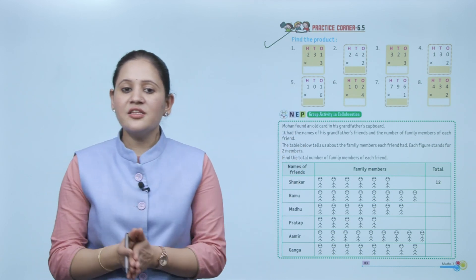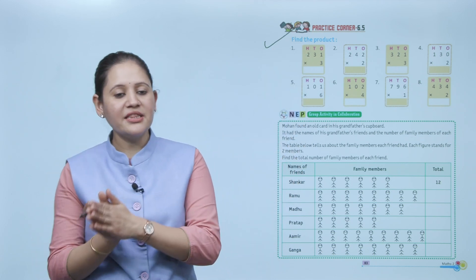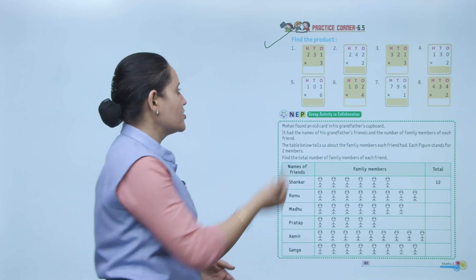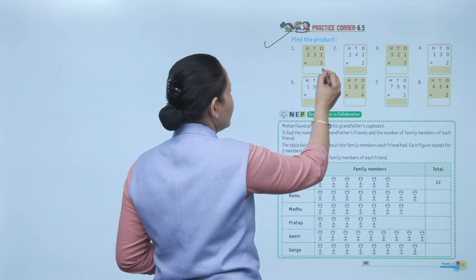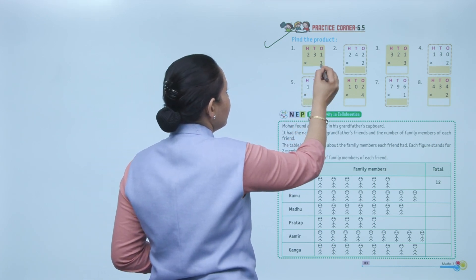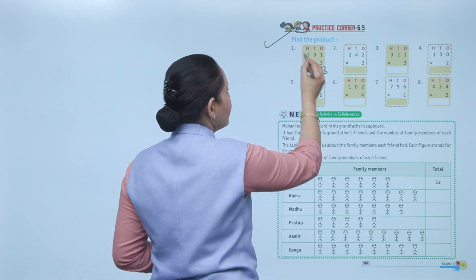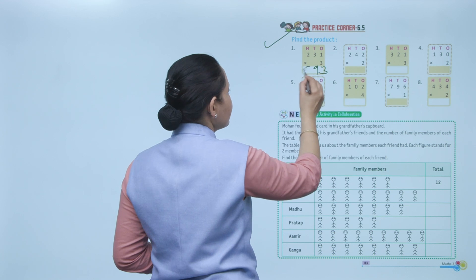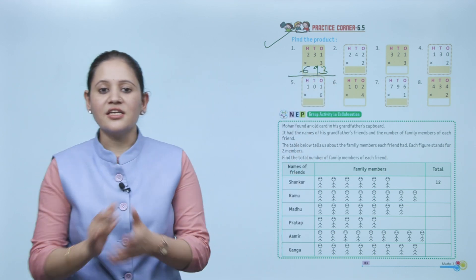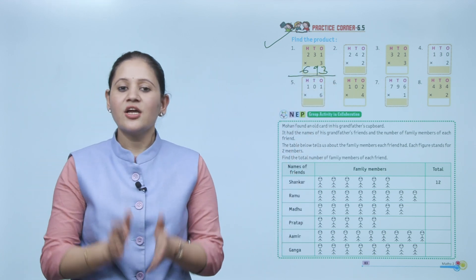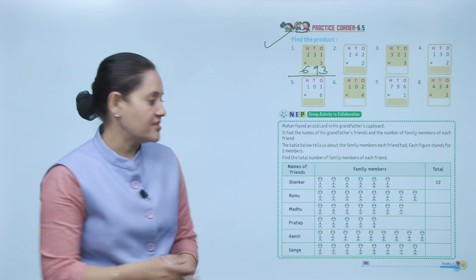Practice Corner 6.5: Find the product. Multiply 231 by 3. Start from ones: 3 into 1 equals 3; 3×3 equals 9; 3×2 equals 6. So the product is 693.